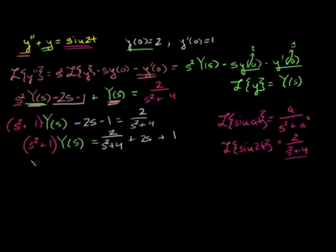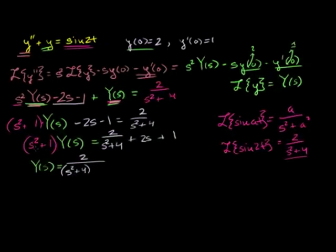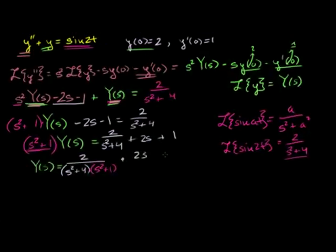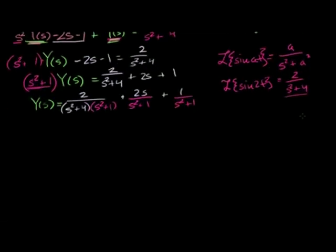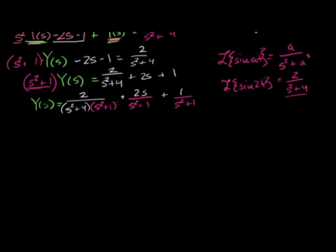Dividing both sides by s² + 1, we get Y(s) = 2/[(s² + 4)(s² + 1)] + 2s/(s² + 1) + 1/(s² + 1). In order to take the inverse Laplace transform, I need to get it into simple fraction form. I'm going to do partial fraction decomposition on the first term — this really is the hardest part of these problems.